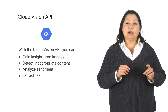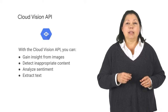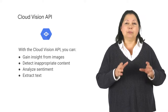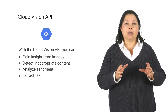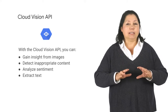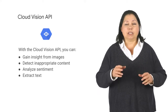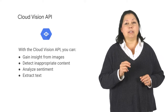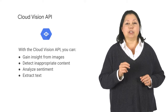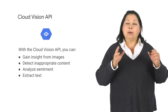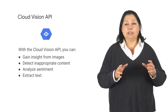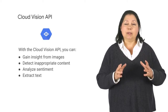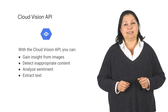Like the other APIs described here, it encapsulates powerful machine learning models behind an easy-to-use API. You can use it to build metadata on your image catalog, moderate offensive content, or even do image sentiment analysis.